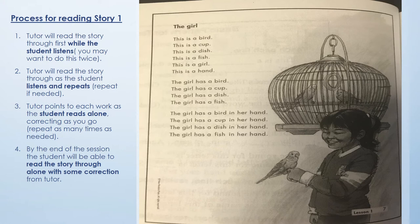By step four — by the end of the session — the student will be able to read through the story alone with some correction from the tutor. The burden of teaching should be largely off the tutor; the student should be able to read through independently. Along with the curriculum is a workbook that allows you to assign homework or do exercises, and there are also two readers.